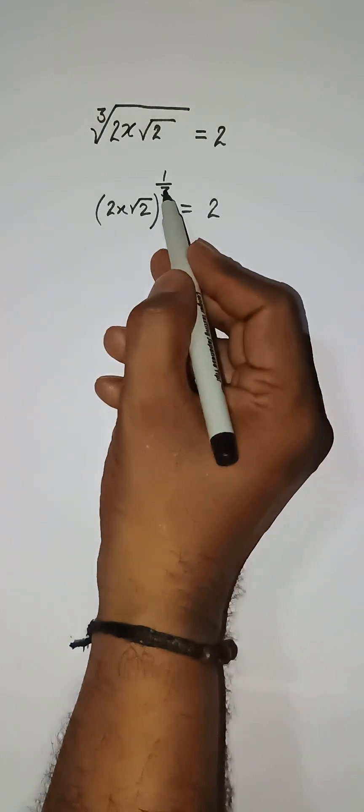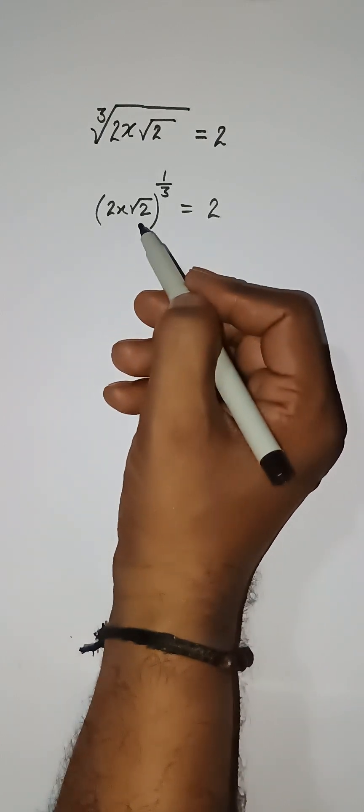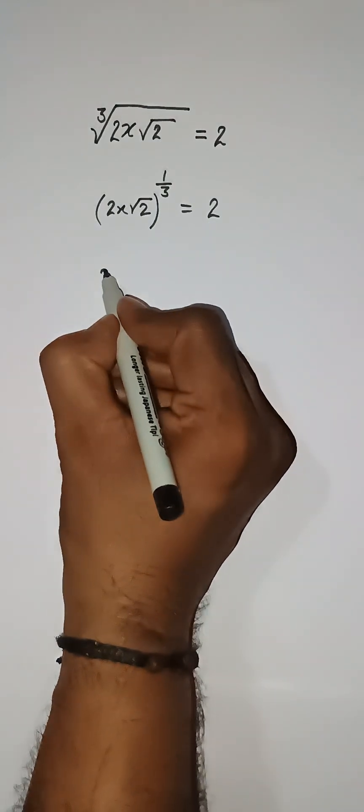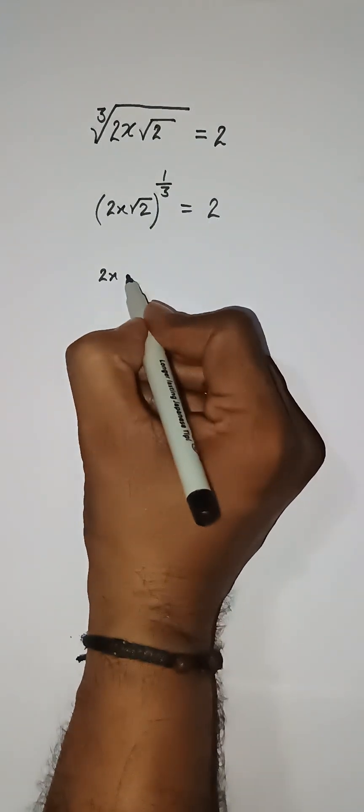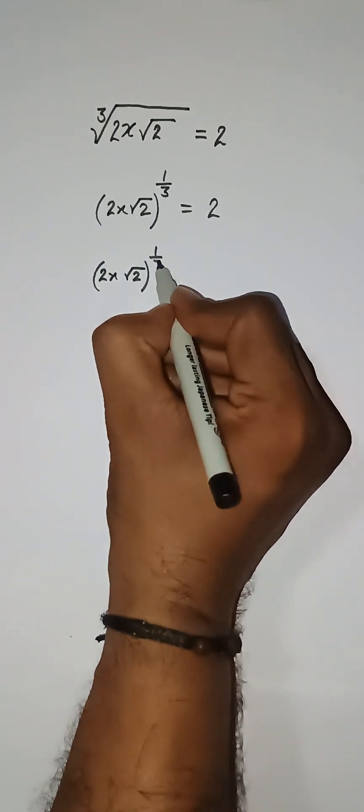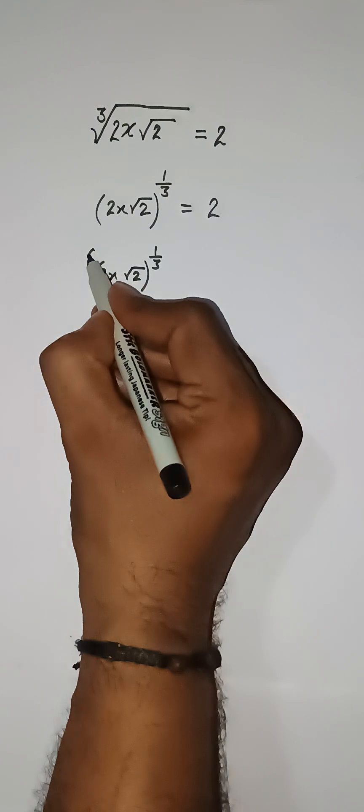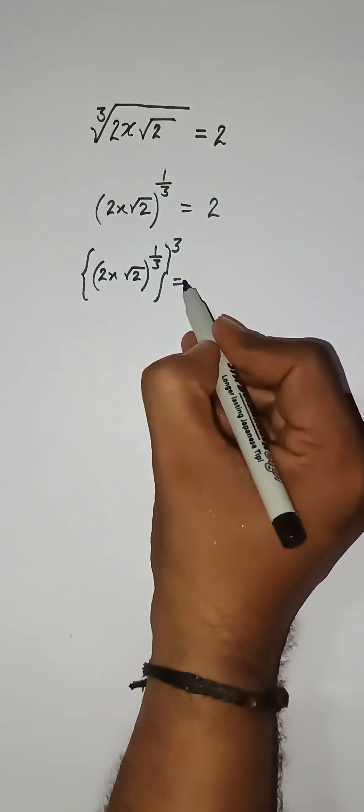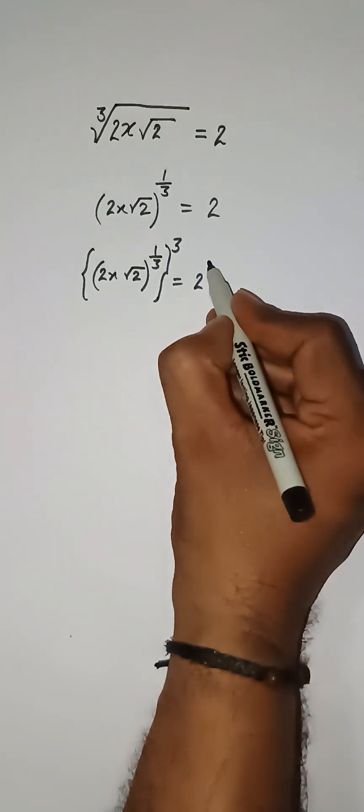Now I need to remove this 1 by 3. How can we remove it? We need to put cube on both sides. So here 2x root under 2, power 1 by 3, I am raising power 3 on the left side. Also I need to raise power on the right side by 3.